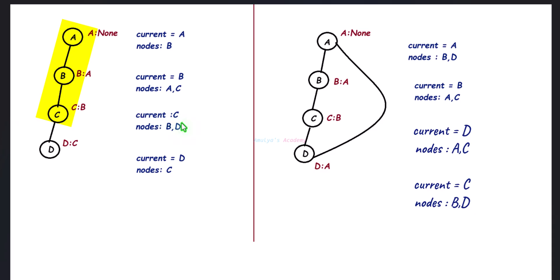Remove the next node from the queue, that is c, and its adjacent nodes are b and d. Here d is not visited, so visit that and add it to the queue. B is already visited, so check whether b is the parent node of c — yes, b is the parent node of c. So go to the next step.